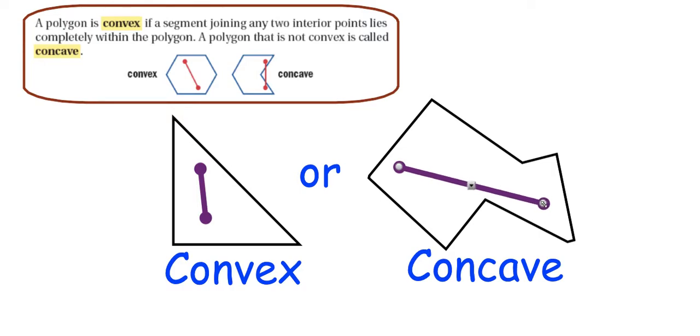However, if I put one point there and I put one point here, notice that right here in this area, that purple line segment has left the polygon. It is outside the perimeter.